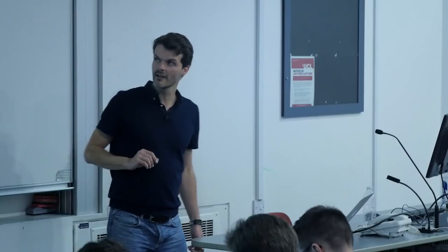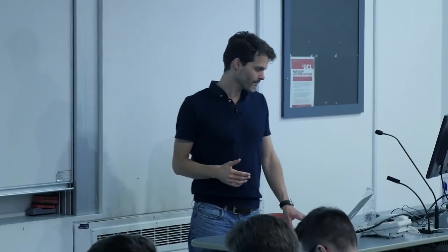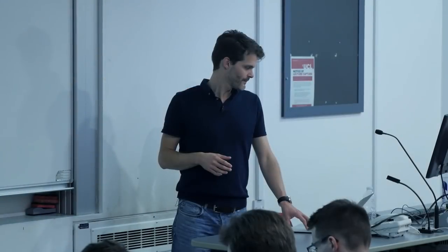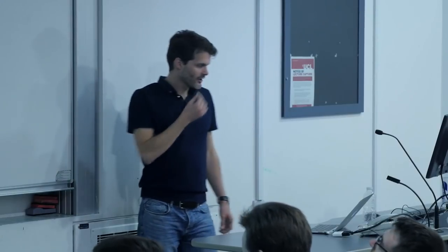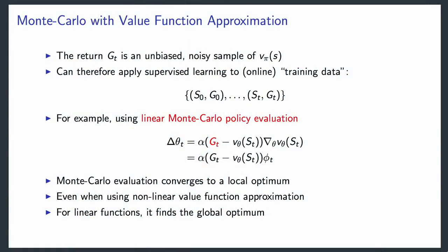With TD learning, we do essentially the same thing but replace the true value with an estimate: the one-step reward plus the discounted approximated value at the next state. Now v_theta appears in more than one place—it's the thing we're updating, but it's also used to construct the target for our update. The update is very similar to the tabular version: step size times the temporal difference error times the gradient of the value function with respect to the current parameters.